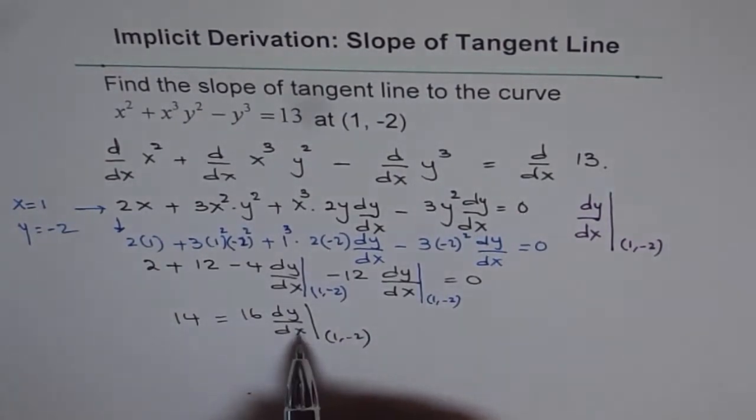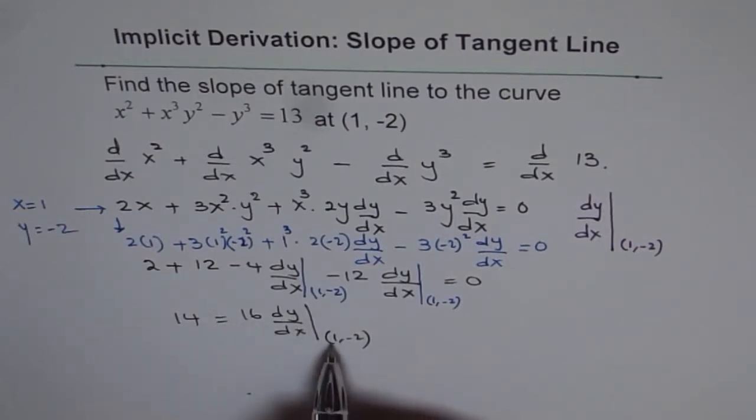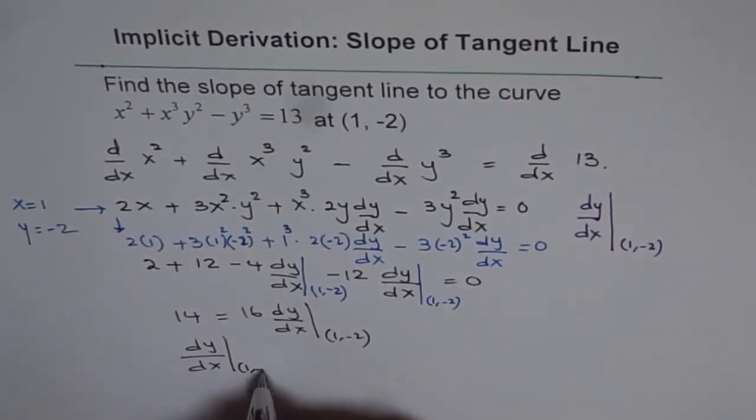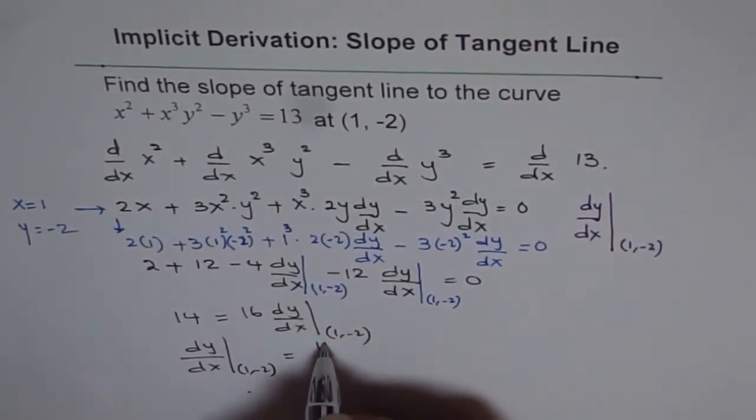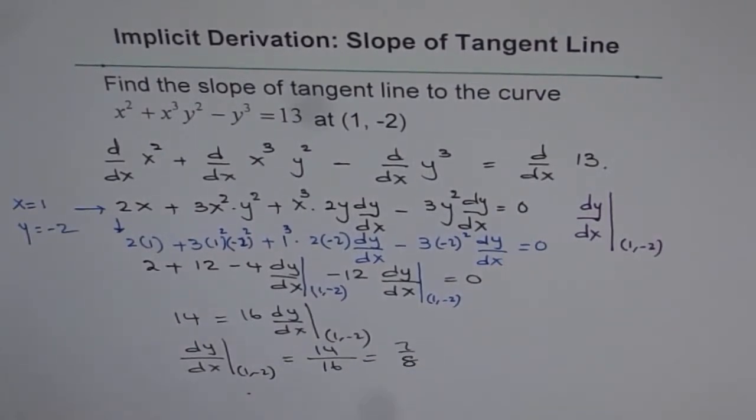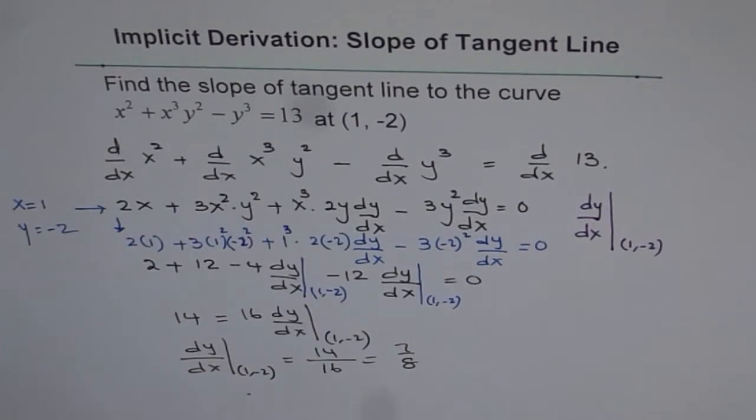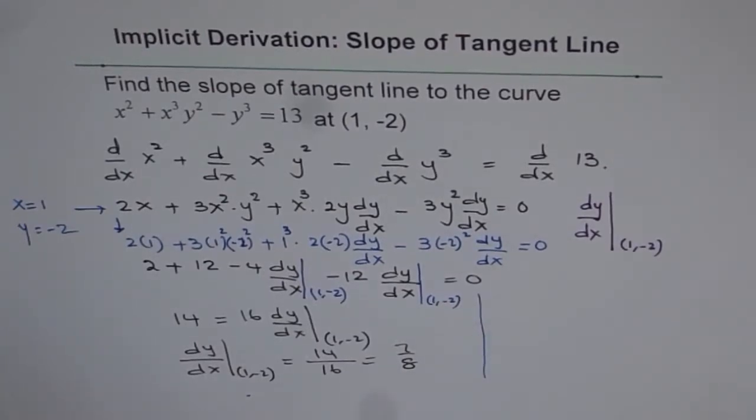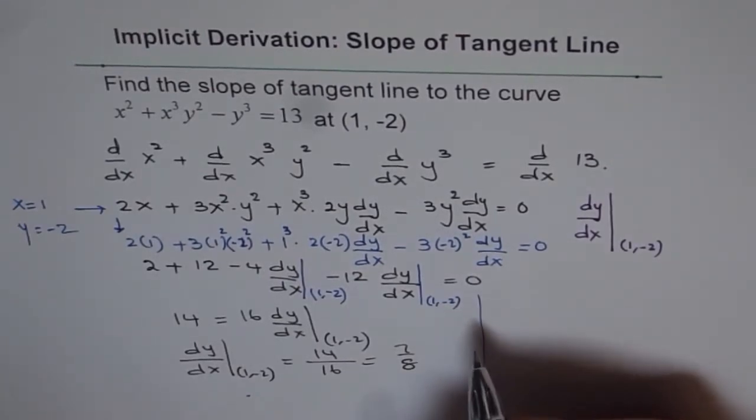Now from here we can find what is dy/dx. So dy/dx is 14/16 at (1, -2). So we get our answer: dy/dx at the point (1, -2) equals 14/16, which is 7/8. So 7/8 is the slope of the tangent line to this curve at x = 1 and y = -2.